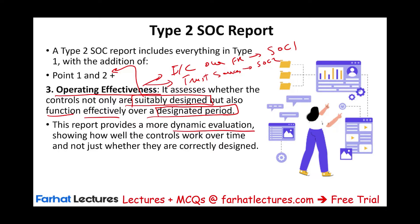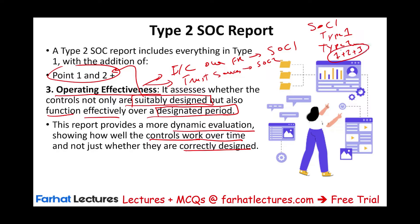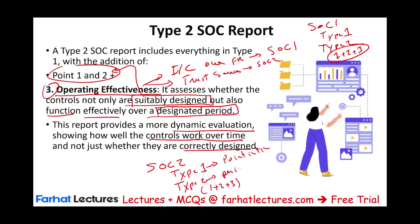This report provides a more dynamic evaluation, showing how well controls work over time — not just whether they are correctly designed or whether the description is proper. In Type 2, you're going above and beyond. Under SOC 1, Type 1 covers points 1 and 2, and Type 2 covers points 1 plus 2 plus 3 — which is operating effectiveness. Same structure applies under SOC 2. Type 1 is a point in time; Type 2 is a period of time.